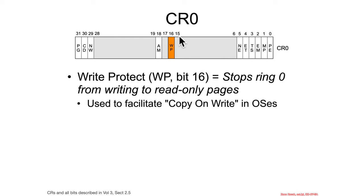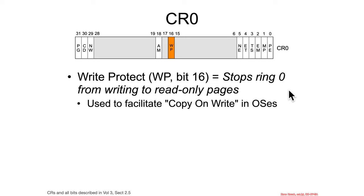Back on CR0, we also saw the WP bit, and we promptly forgot about it. We said that WP stops ring 0 from writing to read-only pages. So if a particular area of memory, according to the page map level 4, is supposed to be read-only, and the write-protect bit is set, then the kernel can't write to that read-only memory. But if the write-protect bit is not set, then the kernel can just go ahead and ignore those read-only access controls and do whatever it wants.